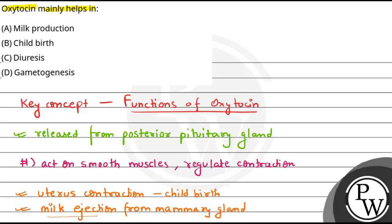Regarding diuresis, this is controlled by the anti-diuretic hormone, that is vasopressin. And gametogenesis is controlled by FSH.